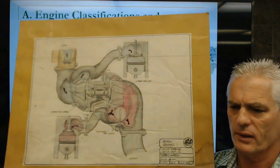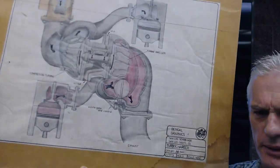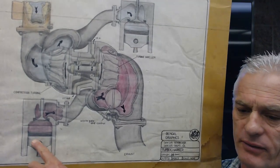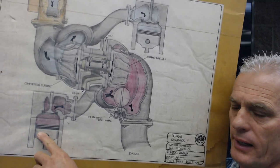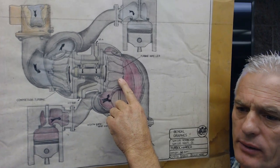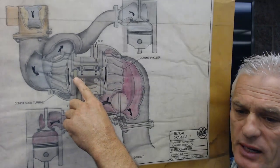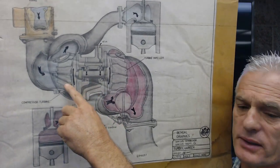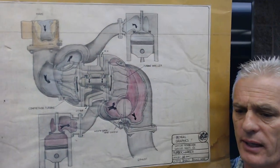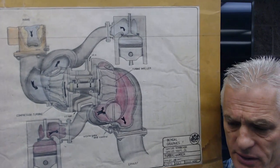Here's a pencil drawing a student did of a turbocharger. Exhaust comes out of a cylinder, goes up and around, blowing on the turbine impeller to get it spinning at 100,000 RPM. That spins the shaft — which is floating on oil — spinning the compressor turbine, which pumps outside air into a cylinder that's on intake. So an exhaust-driven air pump gives us a better way of filling the cylinder.